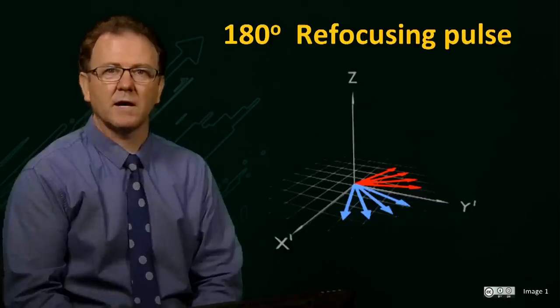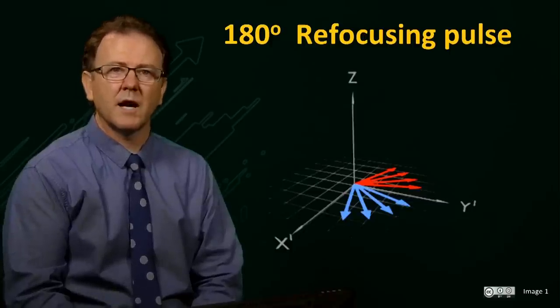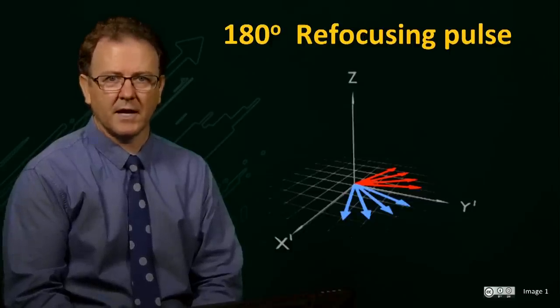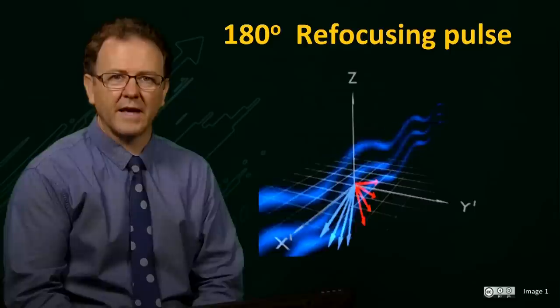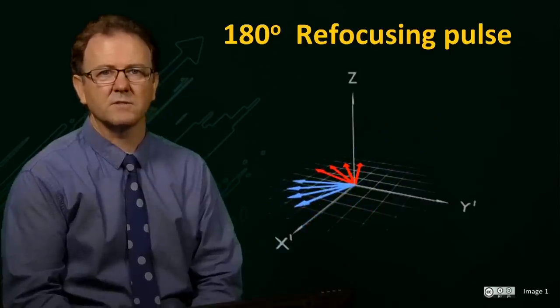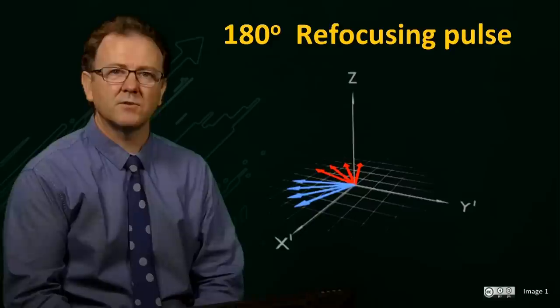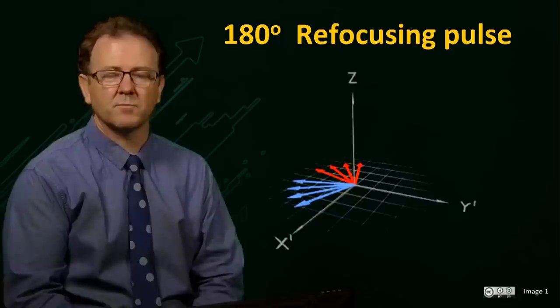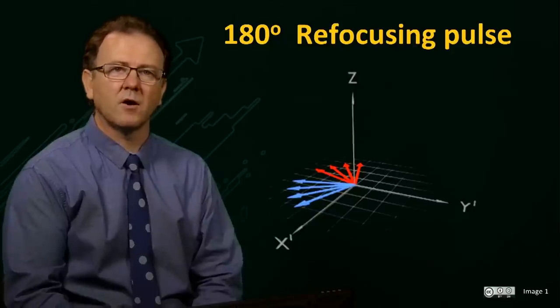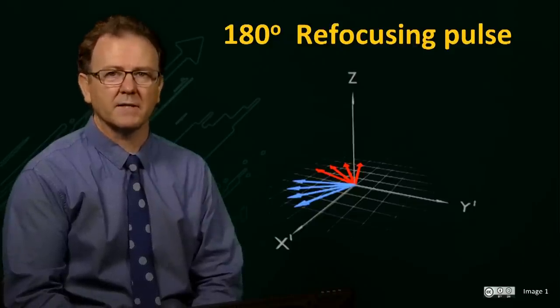If, at a time tau after the 90 degree pulse, a 180 degree RF pulse aligned along the x-axis is applied to the transverse magnetization, we see that the vectors are rotated through 180 degrees around the x-axis, finishing back in the x prime, y prime plane on the other side of the x-axis.